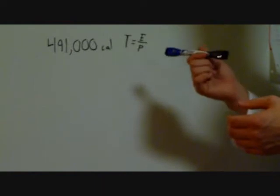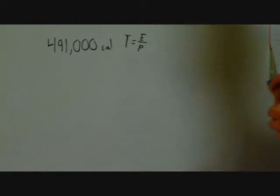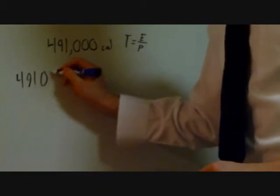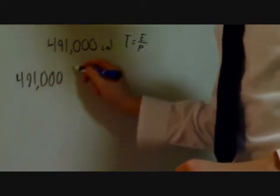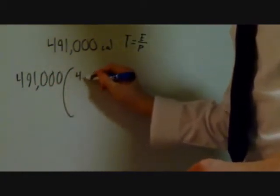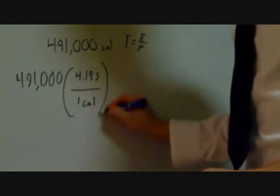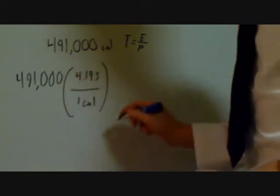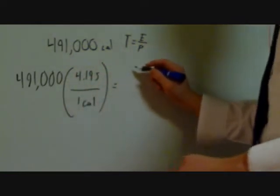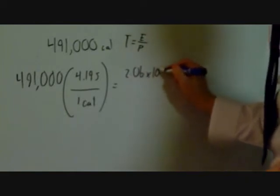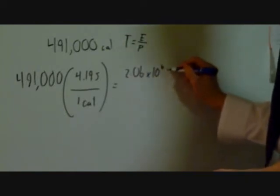The next step will be converting calories to joules. There are 4.19 joules per calorie. So if we do a unit conversion of 491,000 calories, we find that there are 2.06 times 10 to the 6th joules.